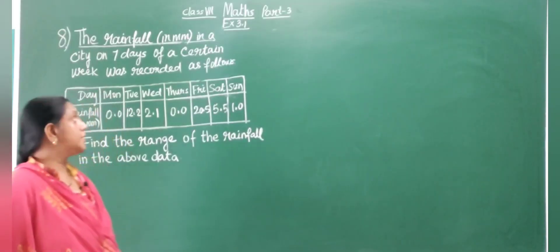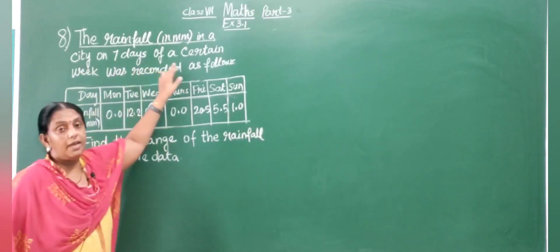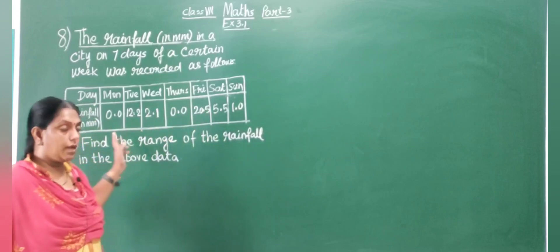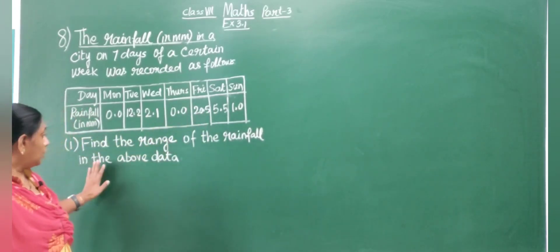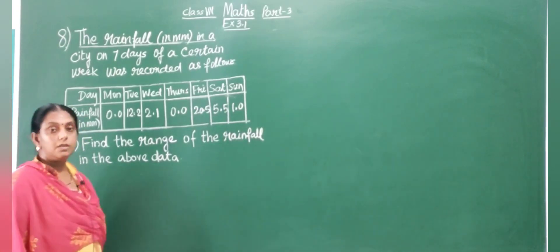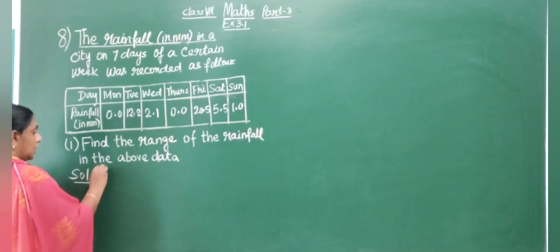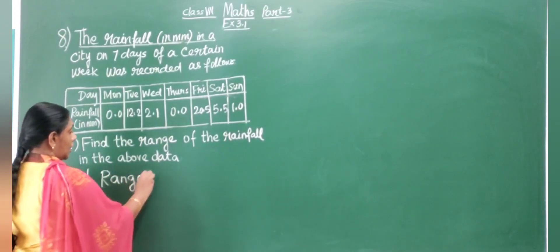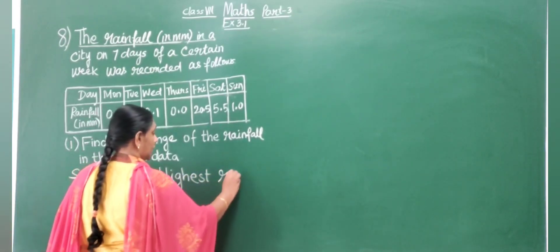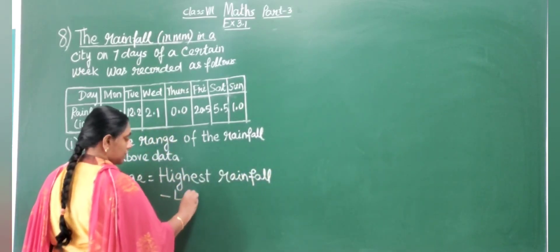Now question number 8. The rainfall in a city on seven days of a certain week was recorded. Find the range of the rainfall. Range equals highest rainfall minus lowest rainfall.